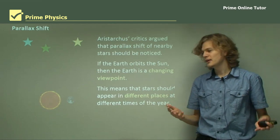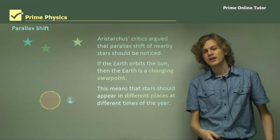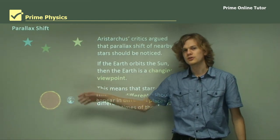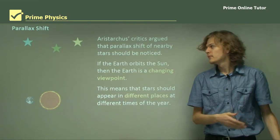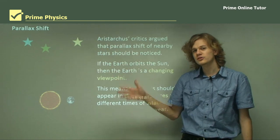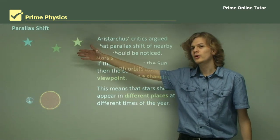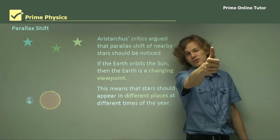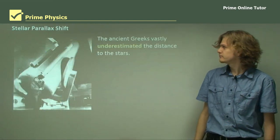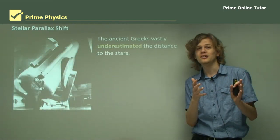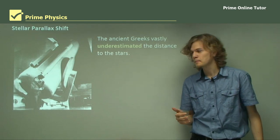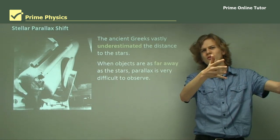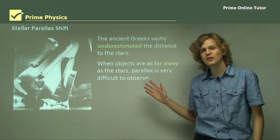This means that the stars should appear in different places at different times of the year. It takes a year for the Earth to go all the way around the Sun. So in six months, it should be completely on the opposite side. That means if we look at a set of stars in winter and in summer, there should be some shift of the nearby star against the background. The ancient Greeks vastly underestimated the distance to the stars, which is why they expected to be able to see parallax shift.